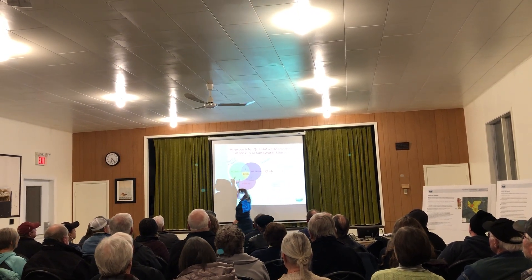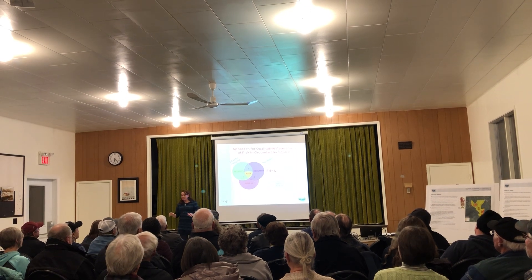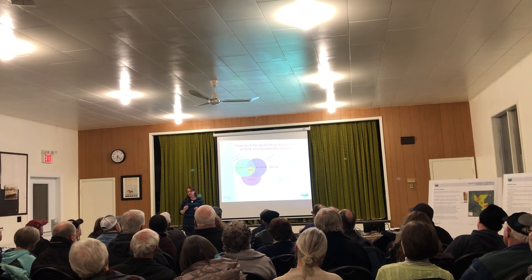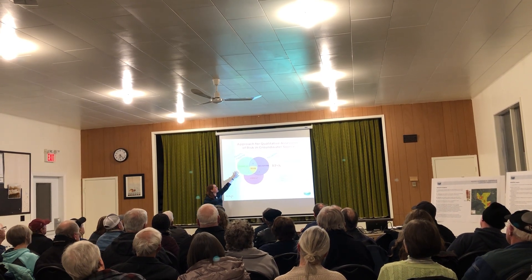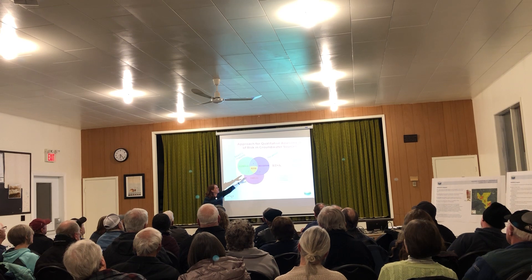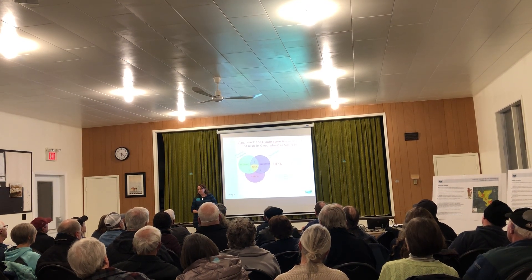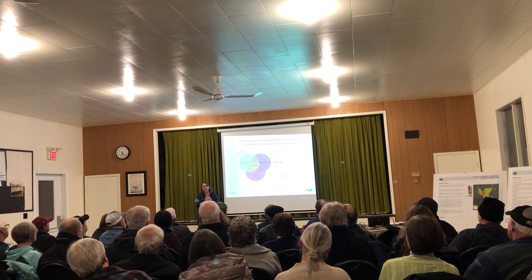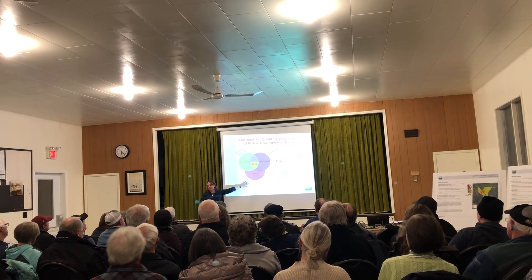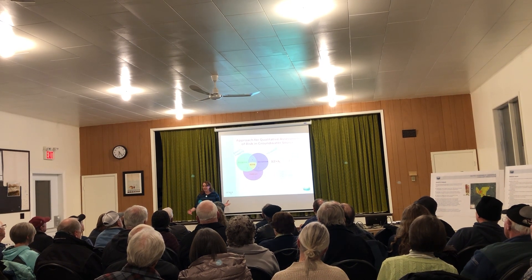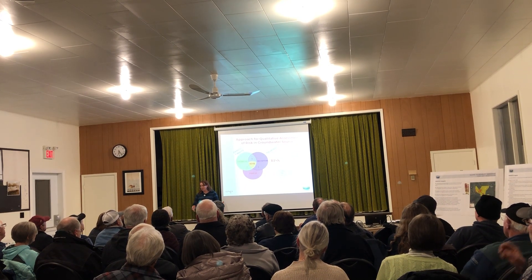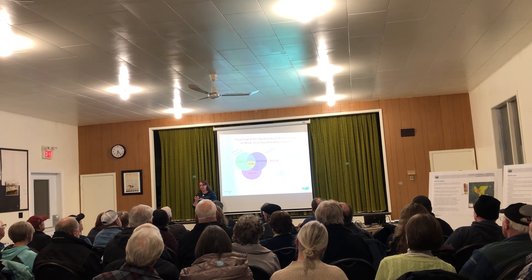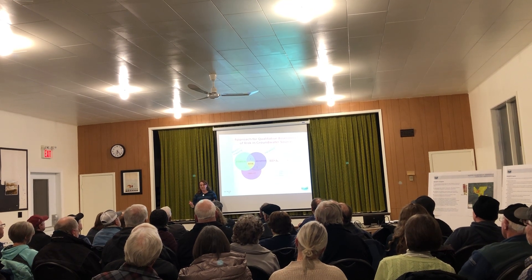All we've done is identify what the pathways are. Those red areas basically show there's a really easy pathway for contaminants to get into your drinking water. But that's only a pathway. If you don't have a receptor — people drinking it — you don't have a complete risk. Obviously we have people drinking it, so we have a pathway and a receptor. But what we don't know yet are the threats.